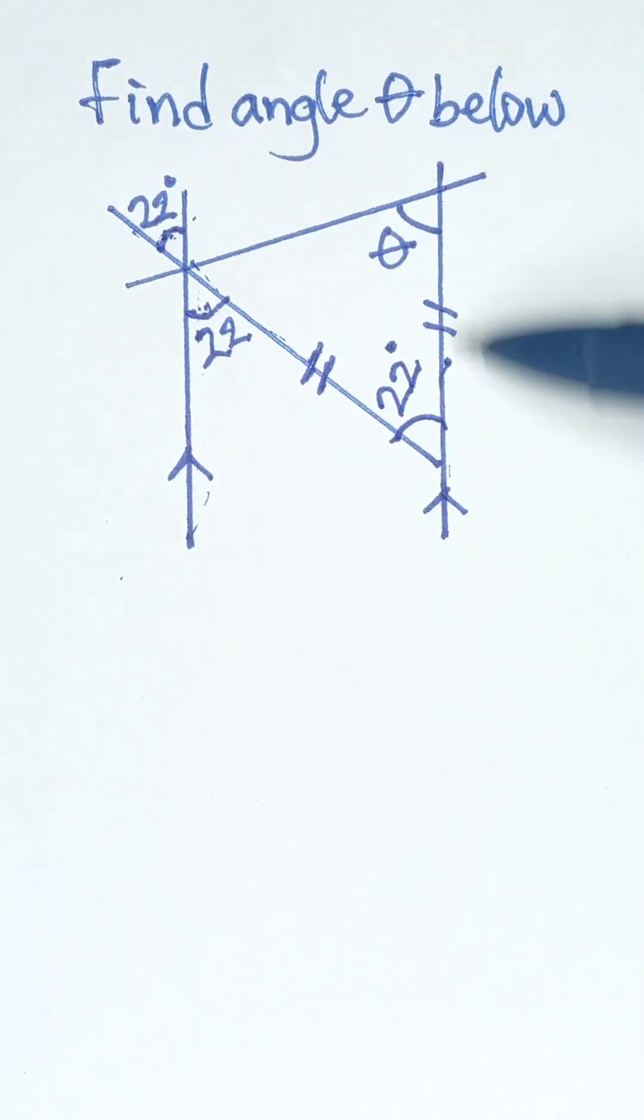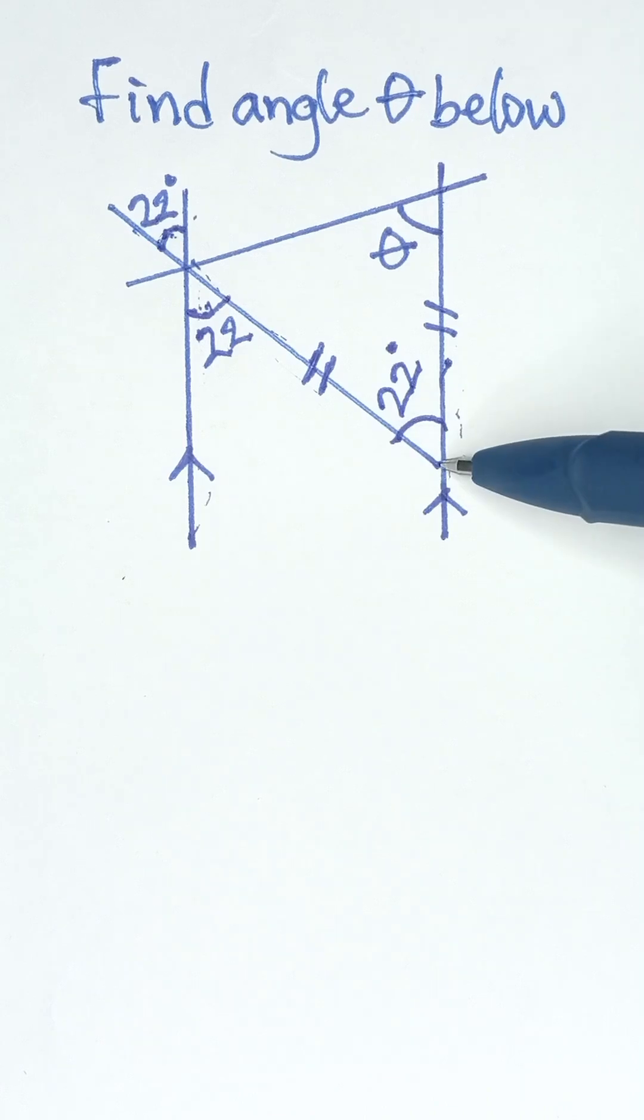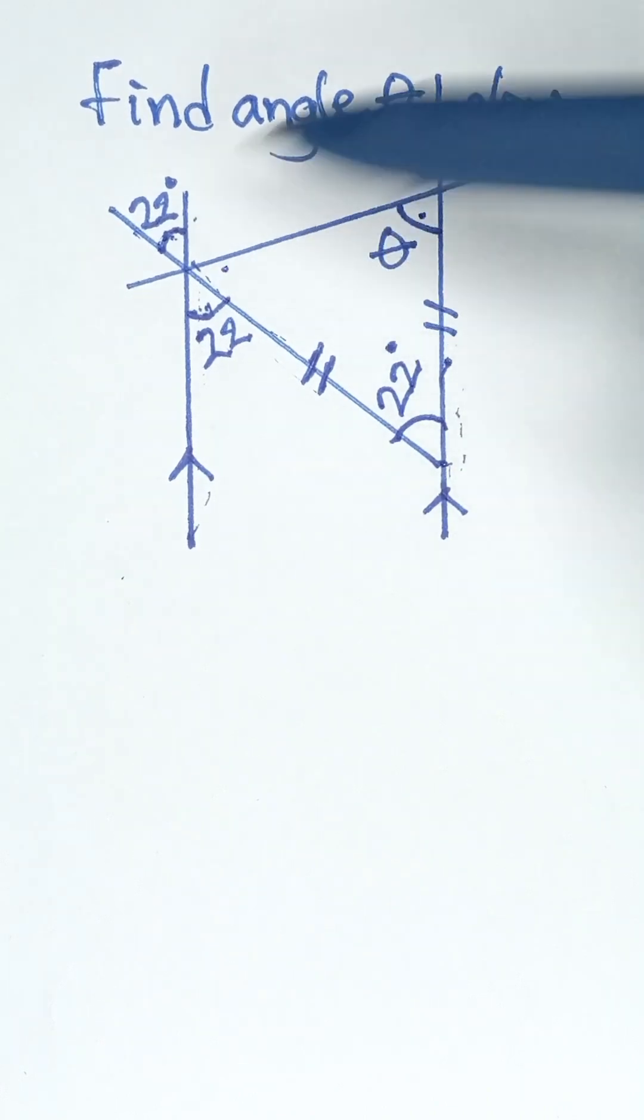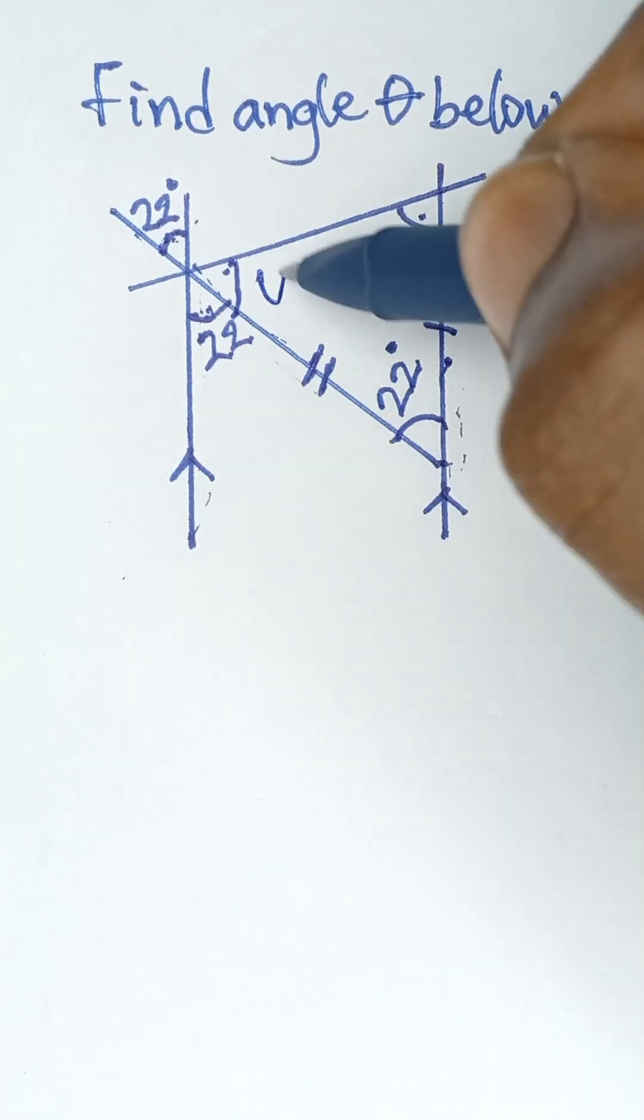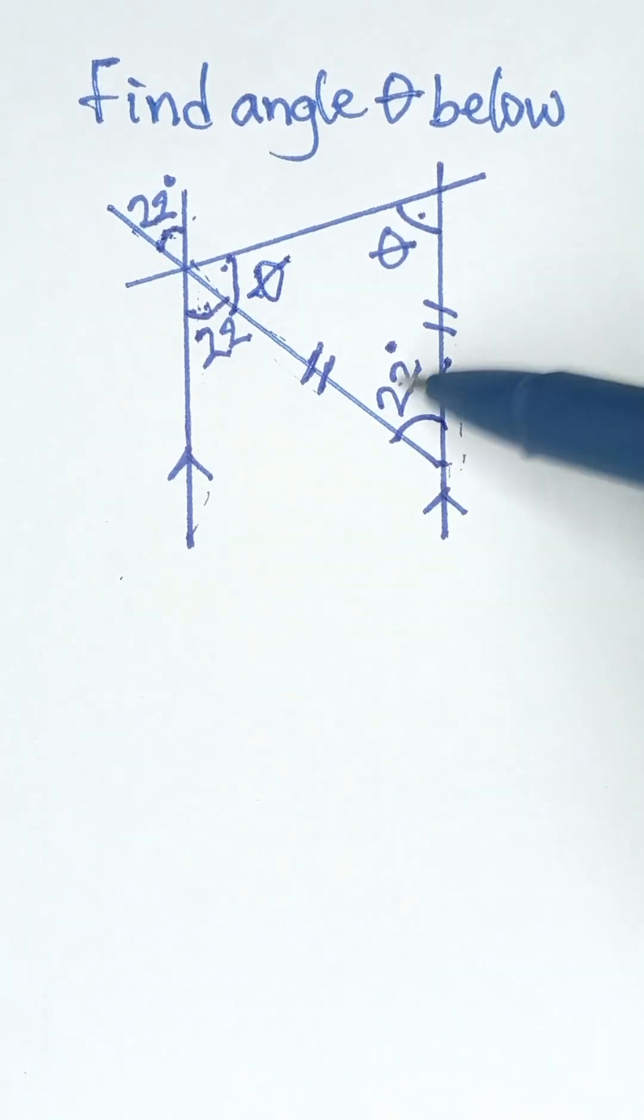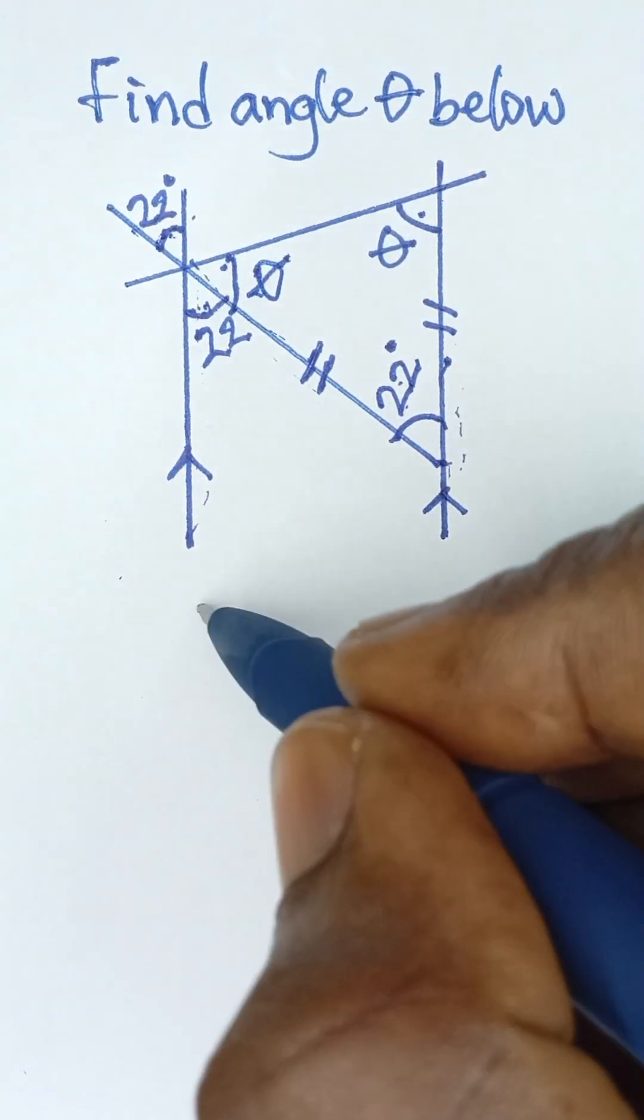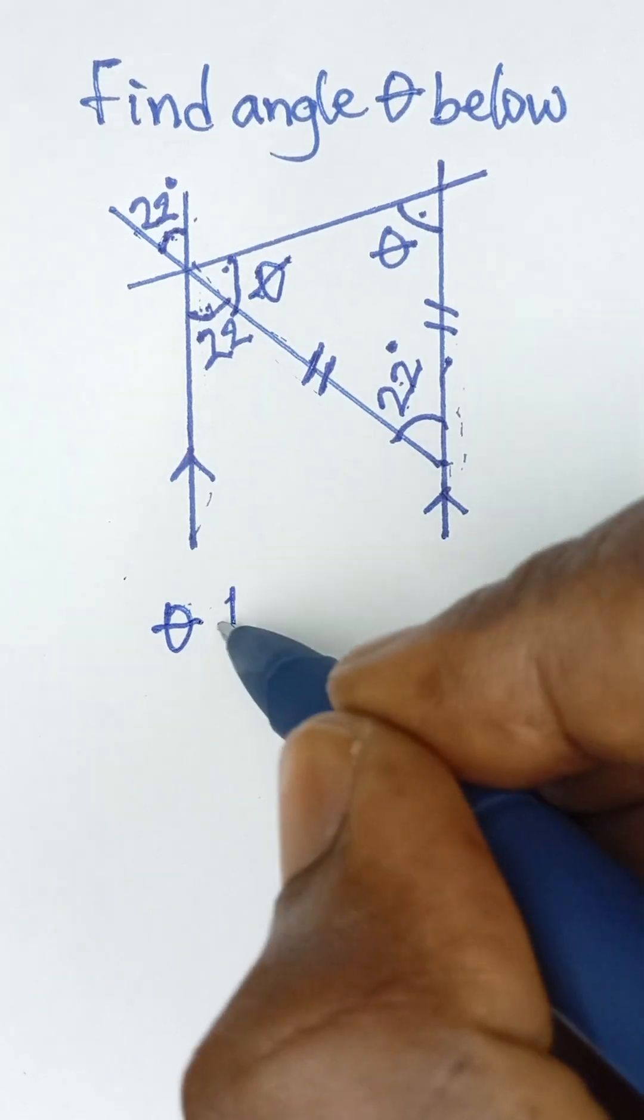Now this triangle is an isosceles triangle, and the base angles of an isosceles triangle are equal. So if this is theta, this is also theta. Now using this full triangle, you agree with me that theta plus theta plus 22 is equal to 180.